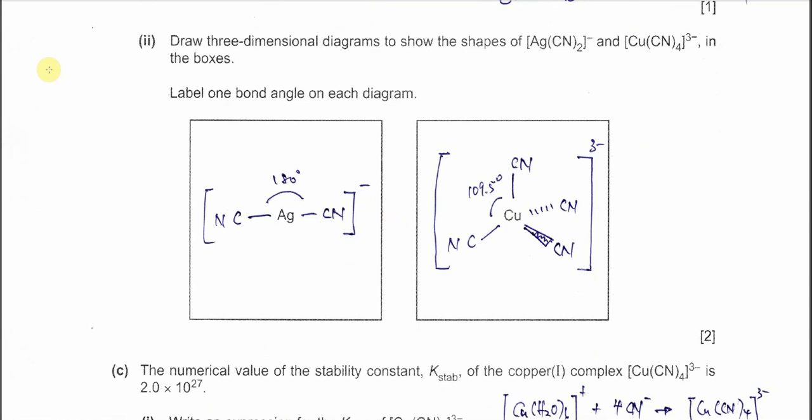For part 2, draw 3D diagrams to show the shapes of silver and copper complex ions. This one is linear. Linear actually has no 3D diagrams because it's just linear, no wedge and dotted lines shown. What you need to do is just draw this as usual, just normal lines. Make sure the bond angle between the cyanide - C, Ag, C bonding - is 180 degrees. This is the linear complex ion.